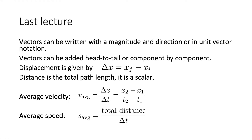A quick recap of the most important concepts from last lecture. We saw that vectors can be written with a magnitude and direction, or represented in unit vector notation, and they can be added head to tail or component by component. Displacement is a vector given by the final position minus the initial position, while distance is a scalar representing the total path length. Average velocity is total distance divided by time, and speed is a scalar while velocity is a vector.